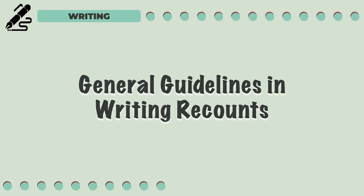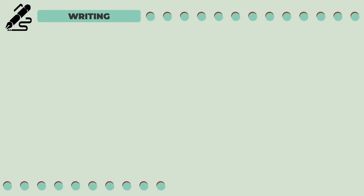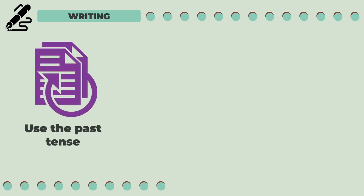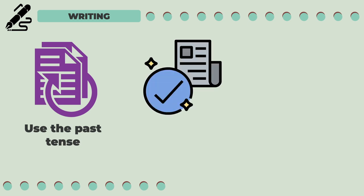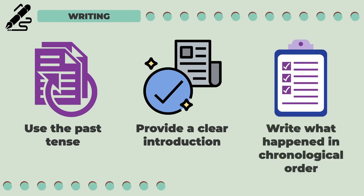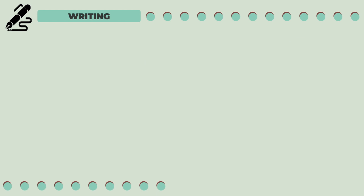Since we now know the difference between a personal and a factual recount, let us now discuss the different things we need to remember in writing recounts. First, use the past tense. Since the event has already happened, use the past tense in writing the text. Second, provide a clear introduction so readers will have a clear idea of what event you are retelling. Third, write what happened in chronological order. For the readers to follow the story easily, start with what occurred first, followed by what happened after that, and so on.